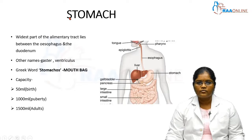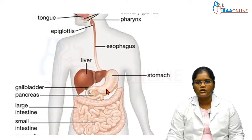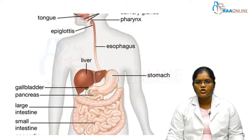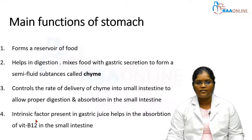Now let's see the external features of the stomach. The stomach is the widest part of the alimentary tract, lying between the esophagus and the duodenum. Other names for the stomach are gaster and ventriculus. The word stomach is derived from the Greek word stomachus, meaning mouth back. The capacity of the stomach varies with age: at birth it is only 50 ml, at puberty around 1000 ml, and in adults it is 1500 ml on average.